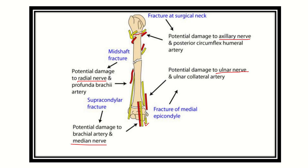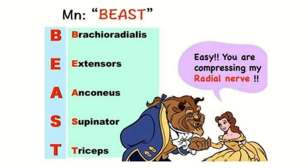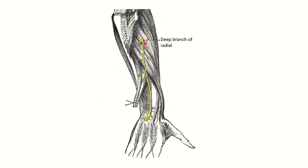Here we can see the supply of the radial nerve using the mnemonic BEAST B: B for brachioradialis, E for extensors — meaning all extensors of the arm, forearm, and hand — A for anconeus, S for supinator, and T for triceps. The deep branch of the radial nerve supplies the extensor surface of the arm, extensors of the forearm, and extensors of the hand.